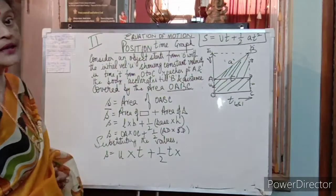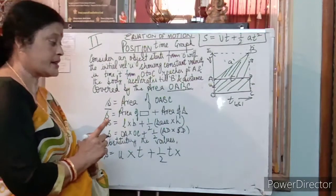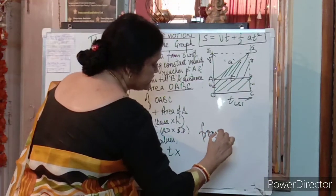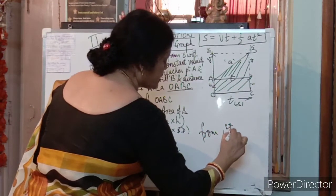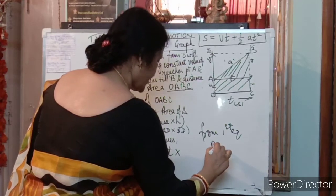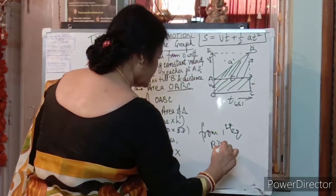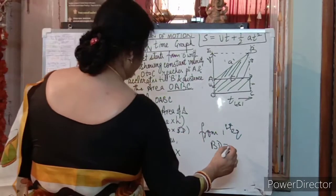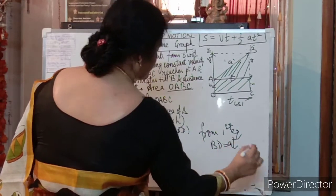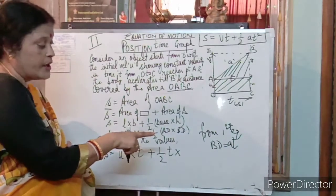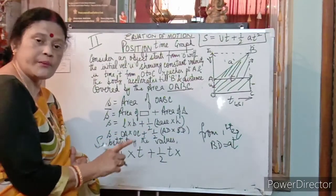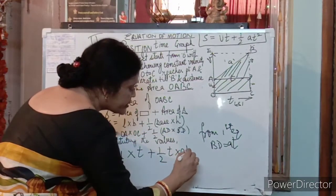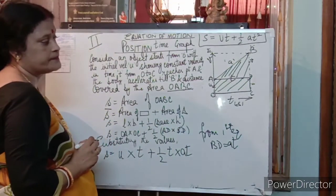Another thing is B, D. B, D hum last wale equation me kya layethe? Toh aapko likhna padega from first equation. From first equation, B, D is equal to A into T. Remember in my first equation I told you A is equal to B, D upon T. So B, D is equal to A into T. Toh instead of B, D we can write A into T.